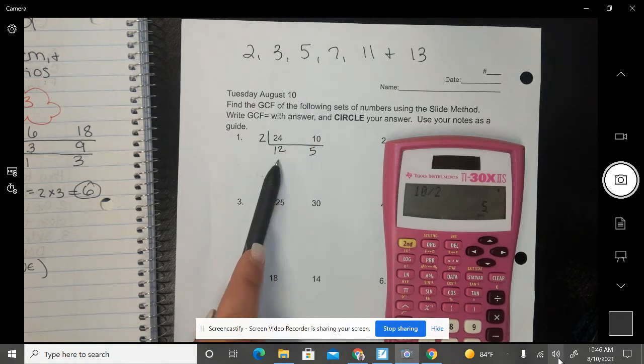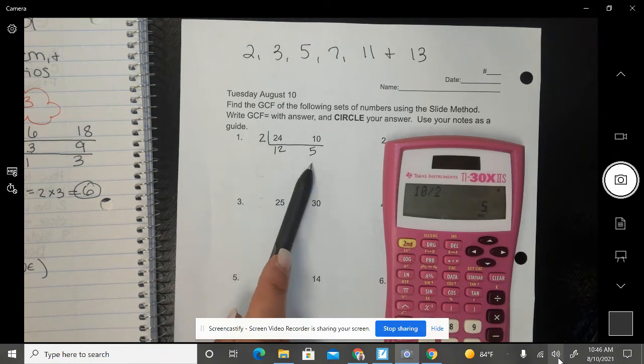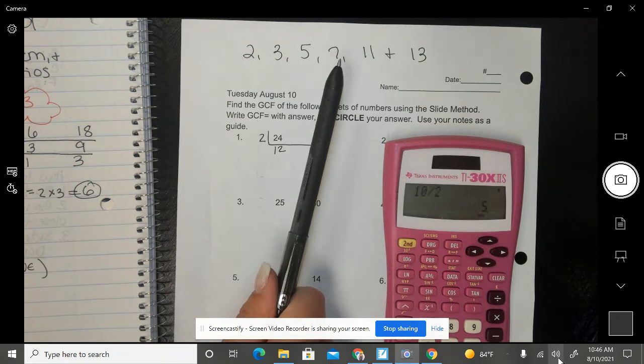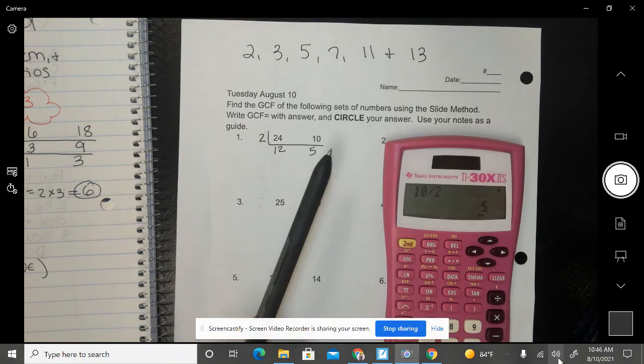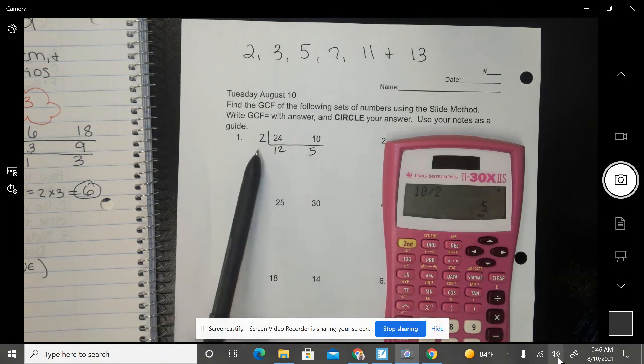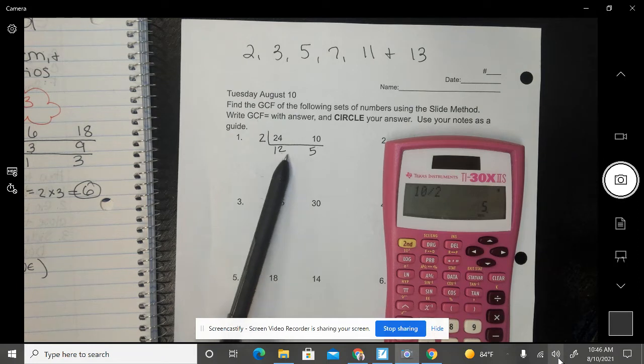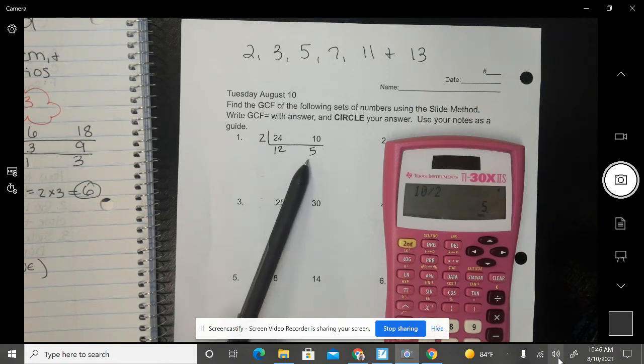So then I go to 5. Is 5 a factor of 12? No. Is 5 a factor of 5? Yes. Well, it has to work for both of them. Because it doesn't work for both of them, 5 doesn't work. I don't need to keep trying these numbers because these numbers are bigger than my smallest number. The number I use cannot be bigger than my smallest number inside the slide right now. So I can't go any further than 12 and 5. That's as low as I can go.